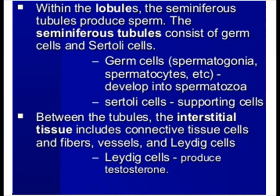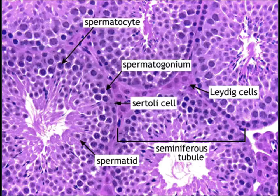Histologically, the testes are composed of lobules, and lobules contain seminiferous tubules. Seminiferous tubules are separated by interstitial connective tissue and Leydig cells. Leydig cells produce testosterone. Under the microscope, in H&E stained tissue, you can appreciate seminiferous tubules lined by Sertoli cells, with spermatocytes in between connective tissue and blood vessels, and Leydig cells in the interstitium producing testosterone.